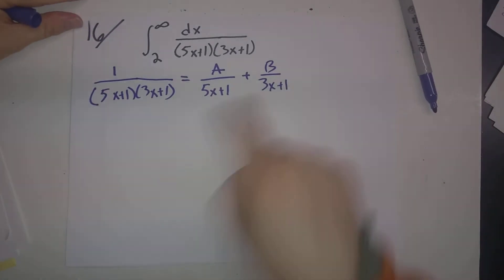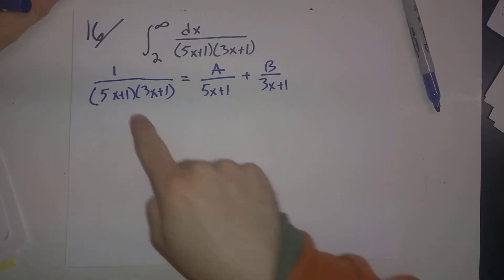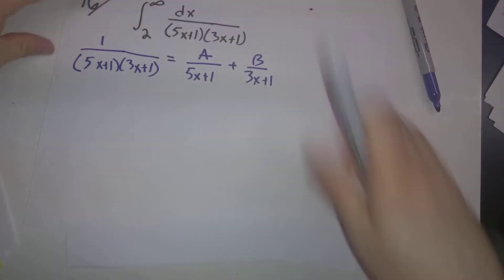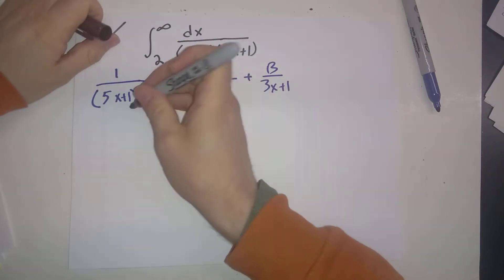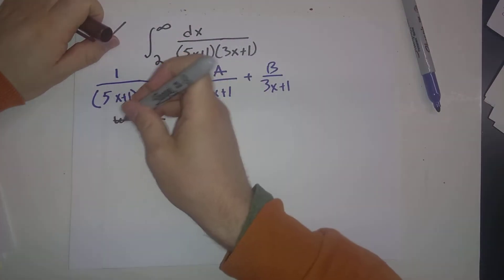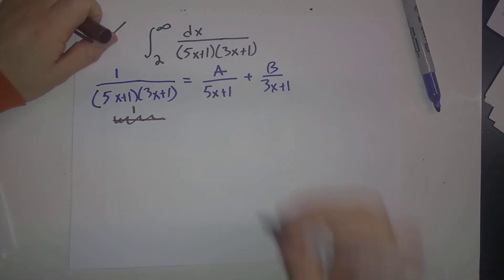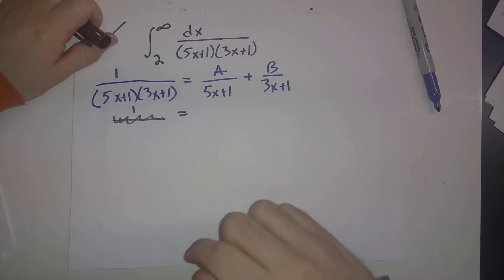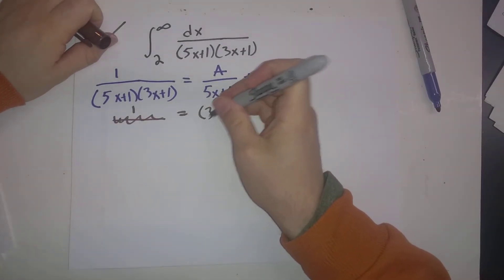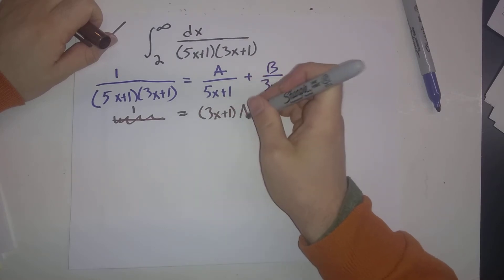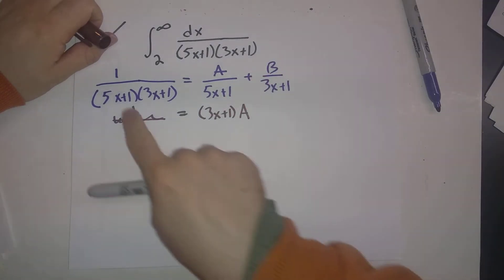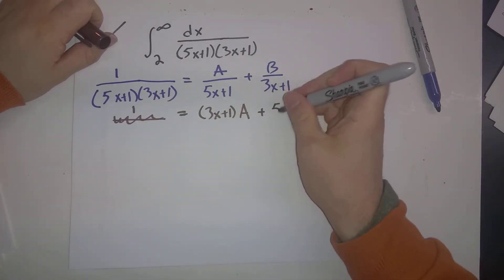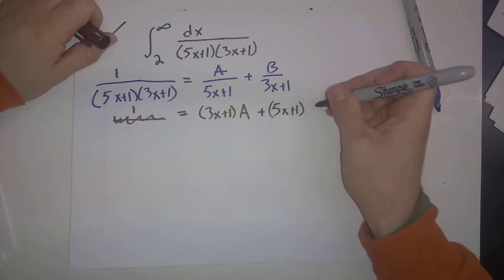If I clear out the denominators by multiplying both sides by (5x+1)(3x+1), I end up with 1 equal to — the (5x+1) factors cancel leaving (3x+1) times A, and the (3x+1) factors cancel leaving (5x+1) times B.